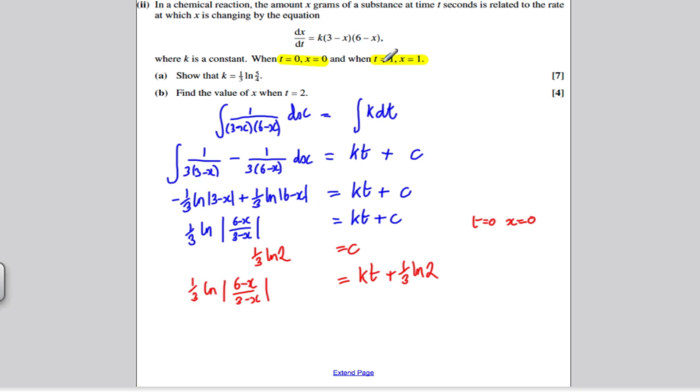So therefore I've got a third ln((6-x)/(3-x)) is equal to kt plus a third ln 2. And then I want to work, I've got when t is 1, x is 1, so subbing all that in, subbing 1 in here, I'd get a third ln(5/2). So 5/2 is equal to 1 in here, we'll just get me k plus a third ln 2. And I could subtract a third ln 2 of both sides and get that k is equal to a third ln(5/2) minus a third ln 2.